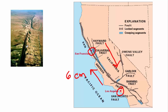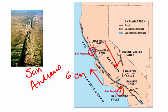Here you can see an aerial view of the San Andreas Fault — that's what this line, this crack, is between this part which is moving south and this part which is moving north.